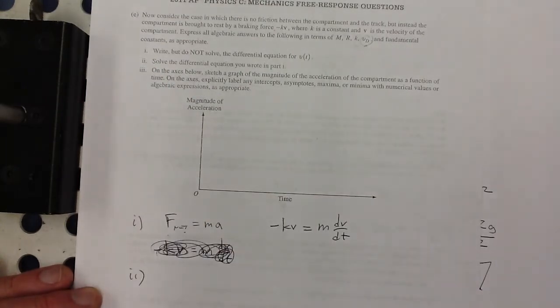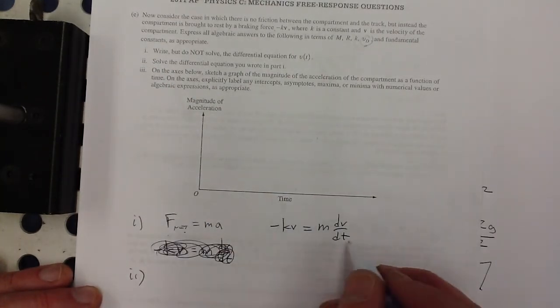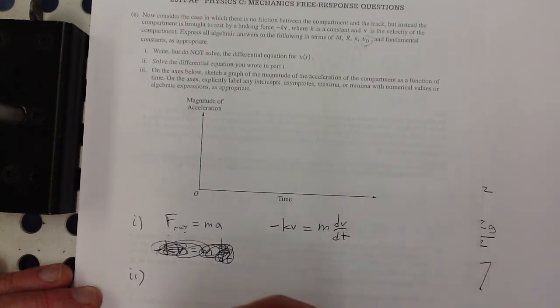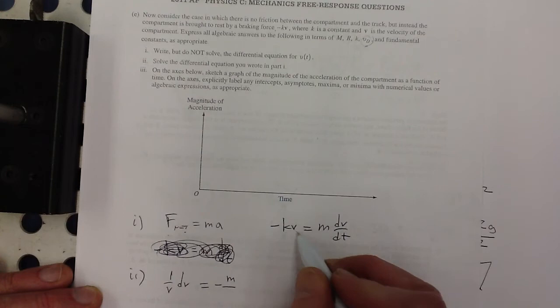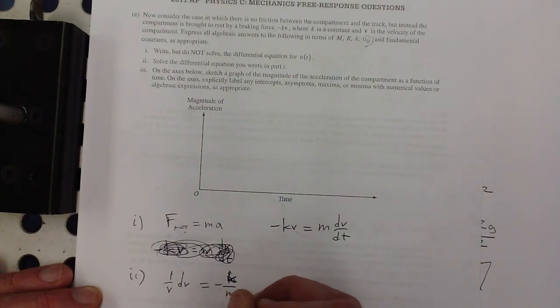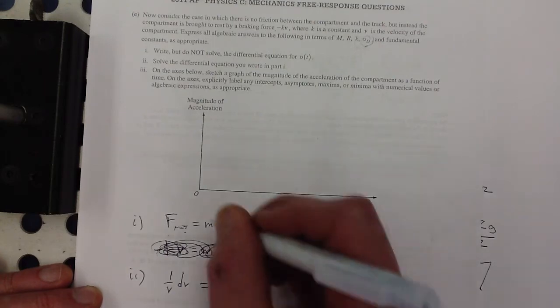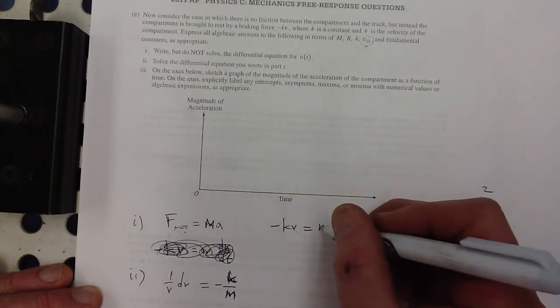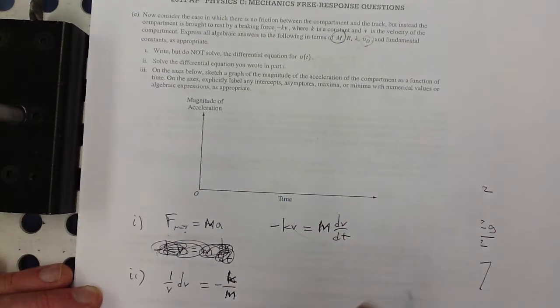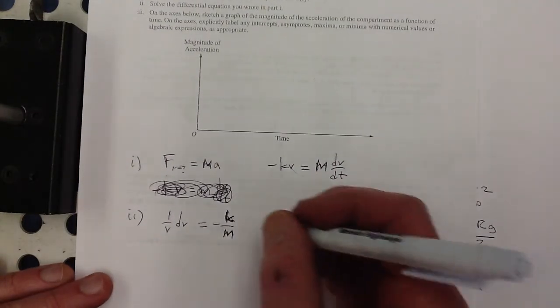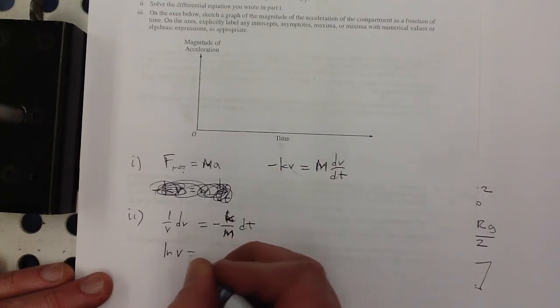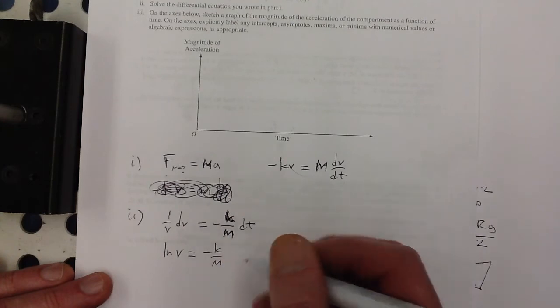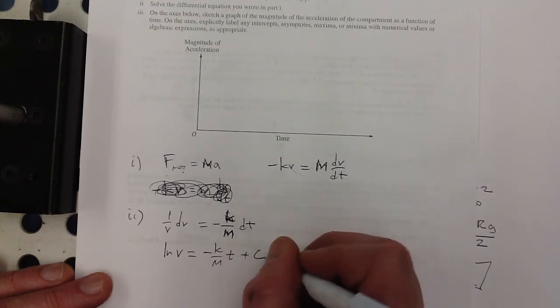All right, solve the differential equation you wrote in part one. All right, so solving this separation of variables, I would get 1 over v dv is equal to negative k over m, I should write capital M here, because this is their mass, right? Sorry about that. Negative k over m dt, that's natural log v is equal to negative k over m t plus c.